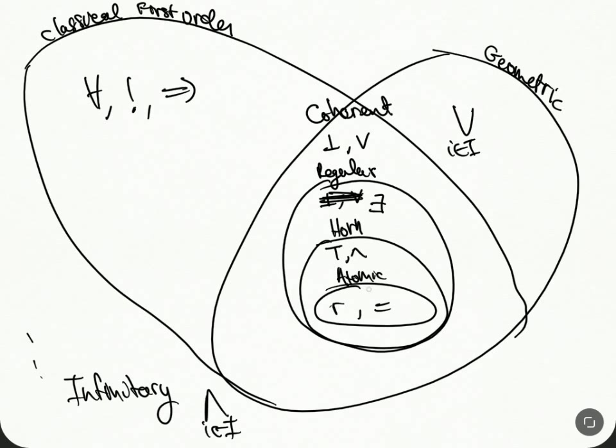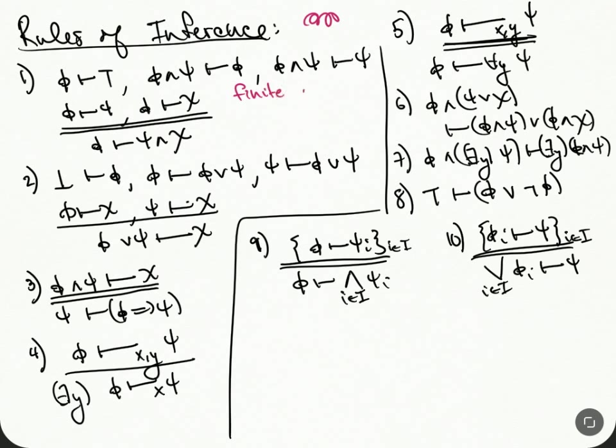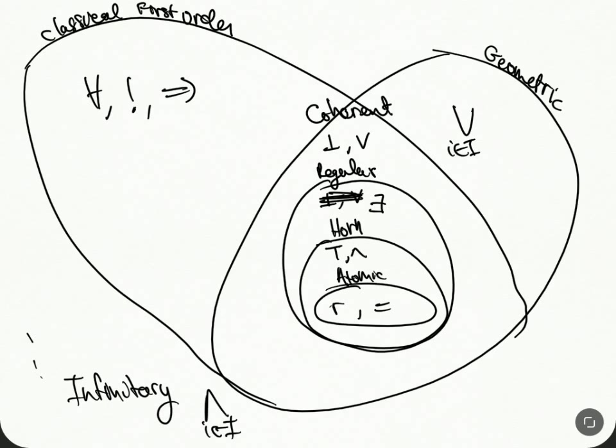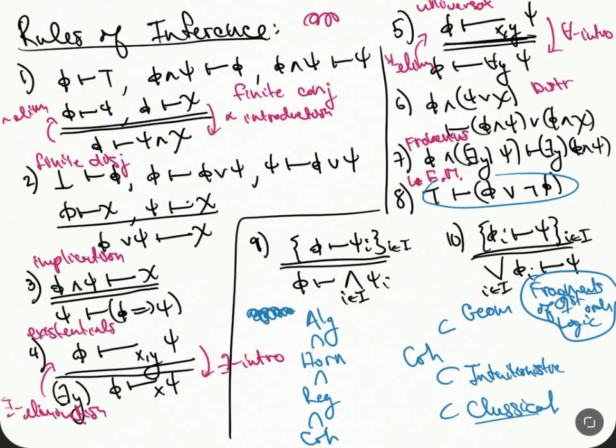The smallest formulas are these atomic ones. For horn logic, for the horn fragment of logic, we're going to add the rules for true and and. The regular version of logic is going to add the existential quantifier. For example, when we want to add the existential quantifier, we'll add this part here, this rule.